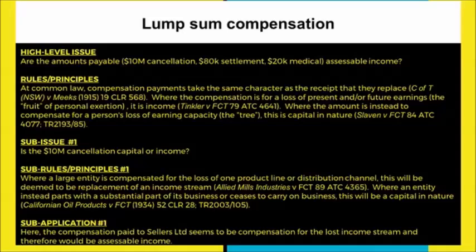Each of those smaller issues can be phrased as a question itself. Here we're talking about Assessable Income, compensation payments, Meeks' case, and the fruit and the tree analogy for all three scenarios. So it's quite applicable to explain the high-level rules at the top: amounts payable as compensation take on the same character as the receipt they replace — and that's true for all of these, so you're not repeating yourself throughout.